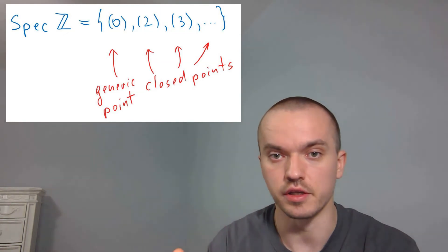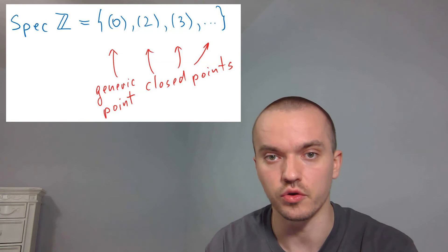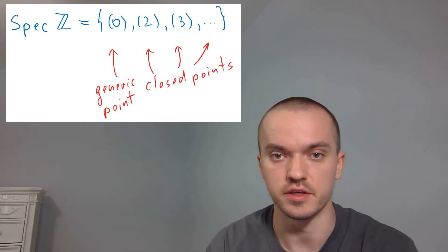But what about zero? If you quotient Z by the zero ideal, you get Z itself, and Z is an integral domain. Z is not a field, so that's why the point zero is called a generic point.